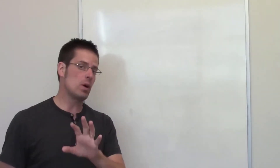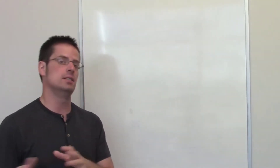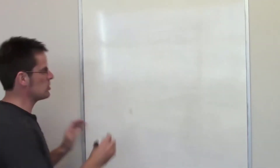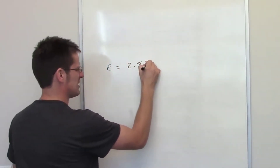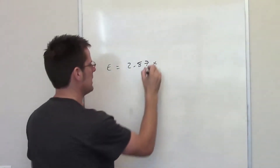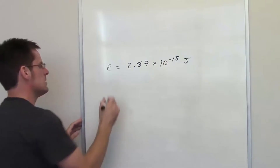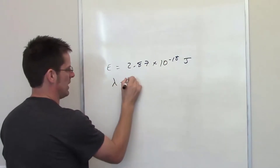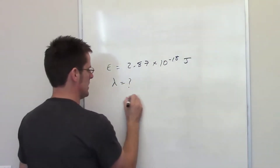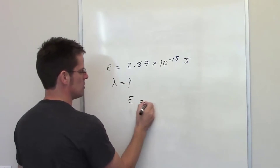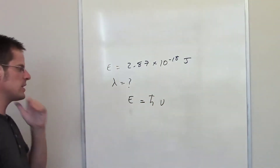In Part B, we're asked to determine the wavelength of a bunch of photons whose energy is equal to 2.87 times 10 to the negative 18 joules. Once again, we need to determine wavelength. As we've already stated, Planck's equation interrelates energy to Planck's constant multiplied by frequency.